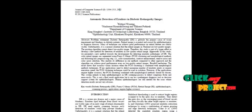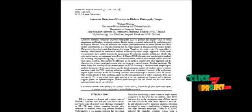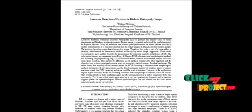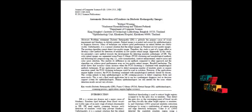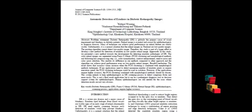Then the images were enhanced using histogram equalization and normalization operations. For normal images, the optical disc is segmented, and for other images we are segmenting the defected regions — that is, for exudates we segment the exudate portions and for hemorrhages we segment the hemorrhage portions. For that segmentation, we apply a level set segmentation algorithm.